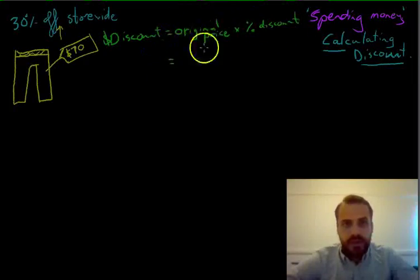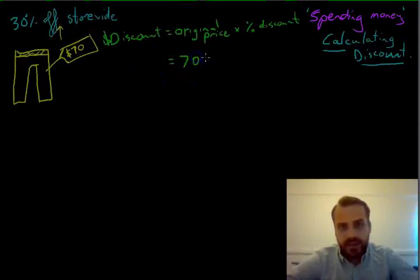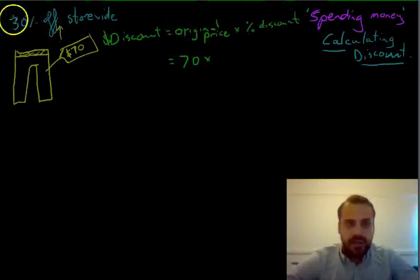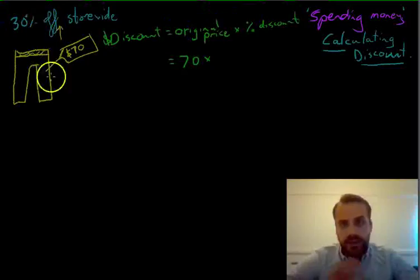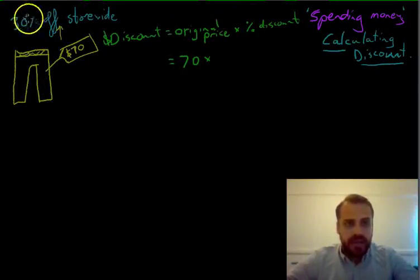So when we start putting in our stuff here, we can see that the original price of these pants is $70. Now we can see that the discount is 30%. Now we've done this quite a few times throughout the year. When we talk about this percentage though, we're going to have to express it as a decimal.